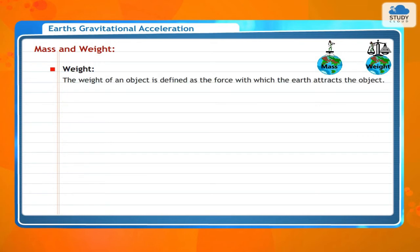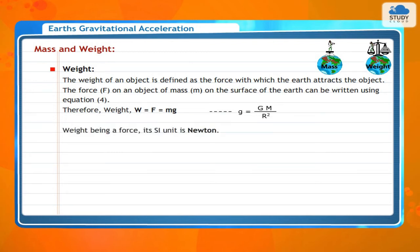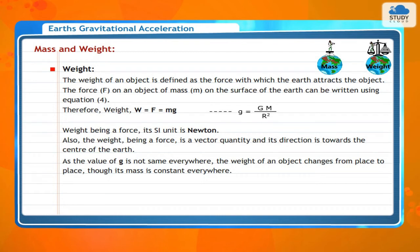Weight. The weight of an object is defined as the force with which the Earth attracts the object. The force F on an object of mass M on the surface of the Earth is: Weight = F = Mg, where g = GM/R². Weight being a force, its SI unit is Newton, and it is a vector quantity directed towards the center of the Earth. Since g is not the same everywhere, the weight of an object changes from place to place, though its mass remains constant.